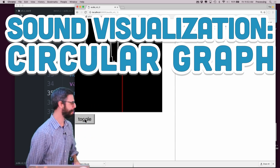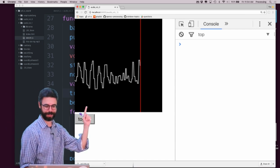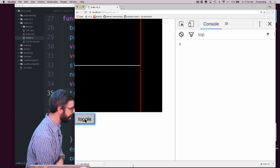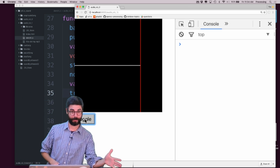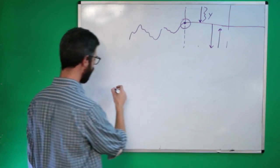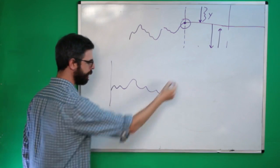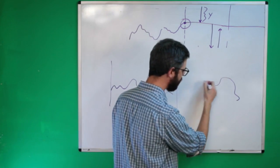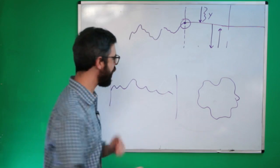Another audio visualization video. In the previous one we left off with this weird shaking crazy graph of the volume of a sound file. What I want to do now — a great suggestion from Oliver in the chat — is instead of graphing along an x-axis, what if I took this graph and wrapped it around a circle?